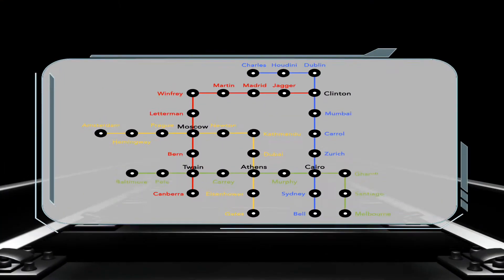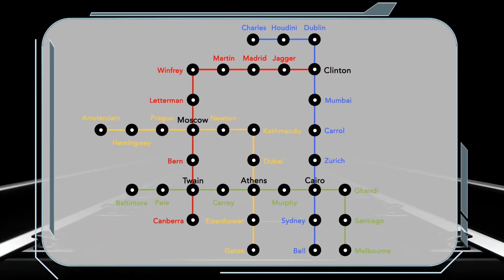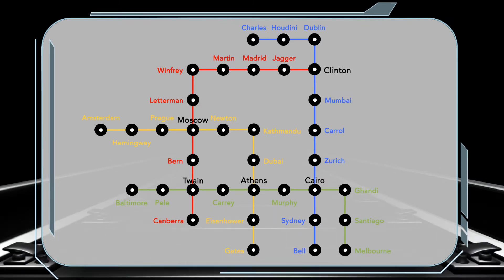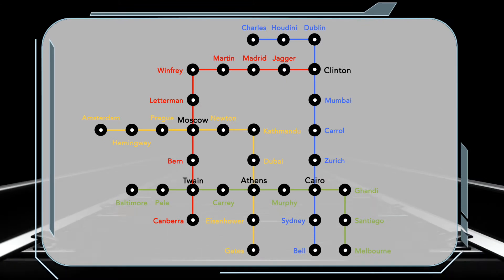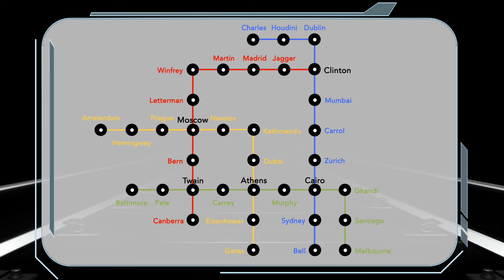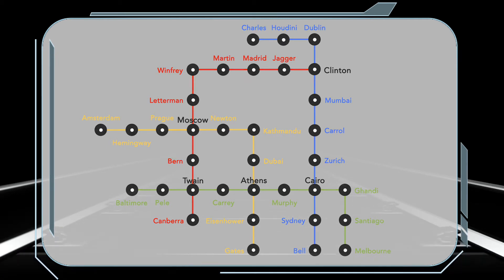In our study we wanted to know whether humans represent their plans in a hierarchical fashion. We asked participants to first familiarise with a virtual subway network, in which they learned the names of the stations and the lines. We then put them under functional magnetic resonance imaging and asked them to perform journeys while they couldn't see the map anymore.